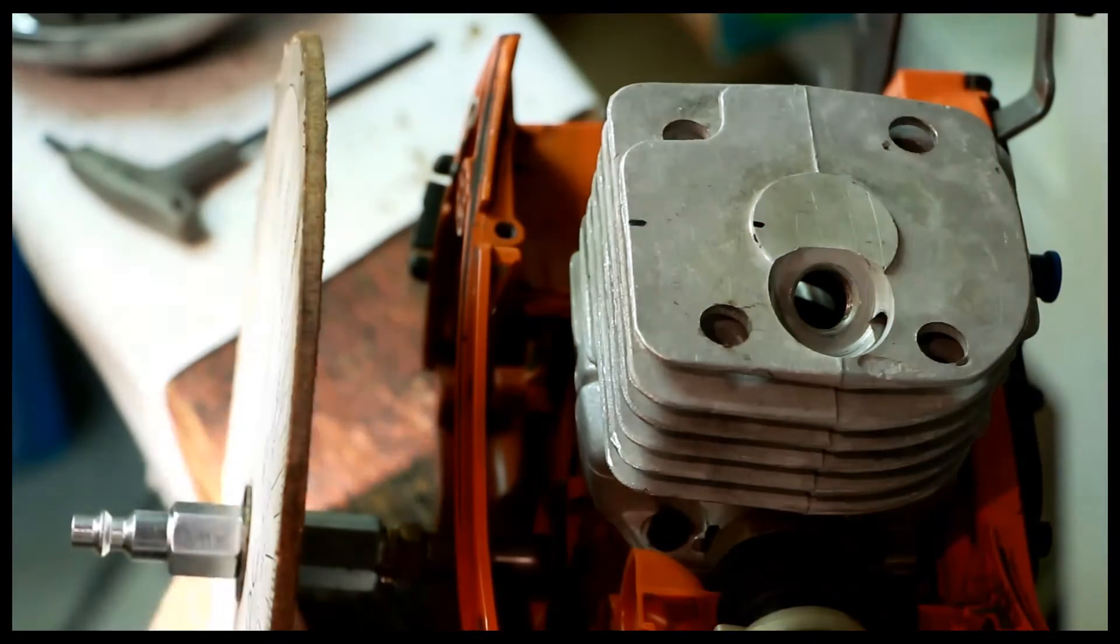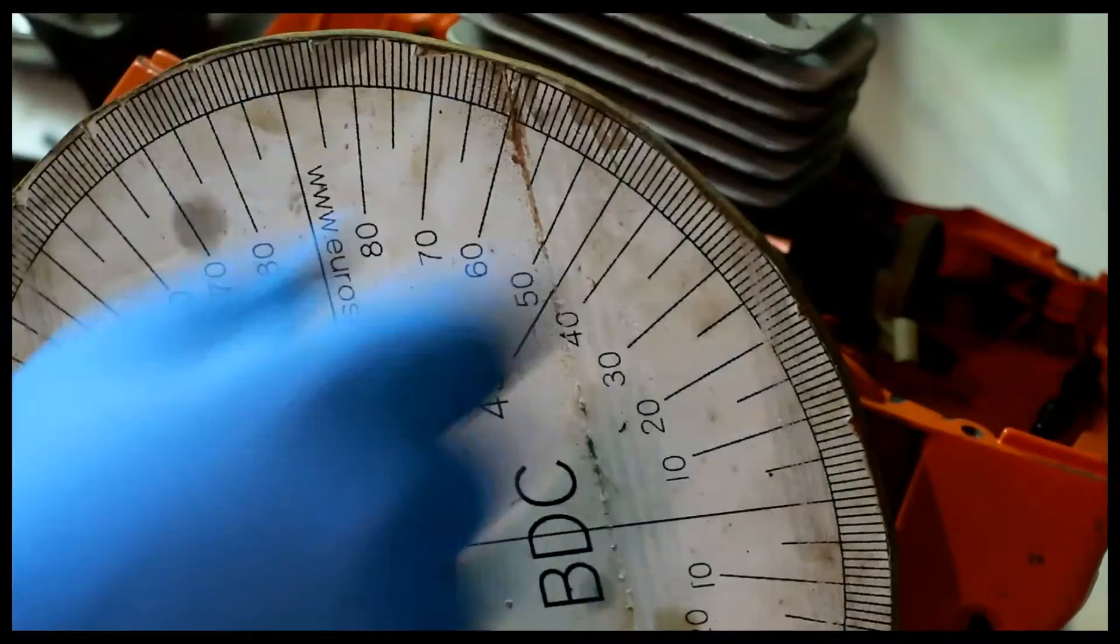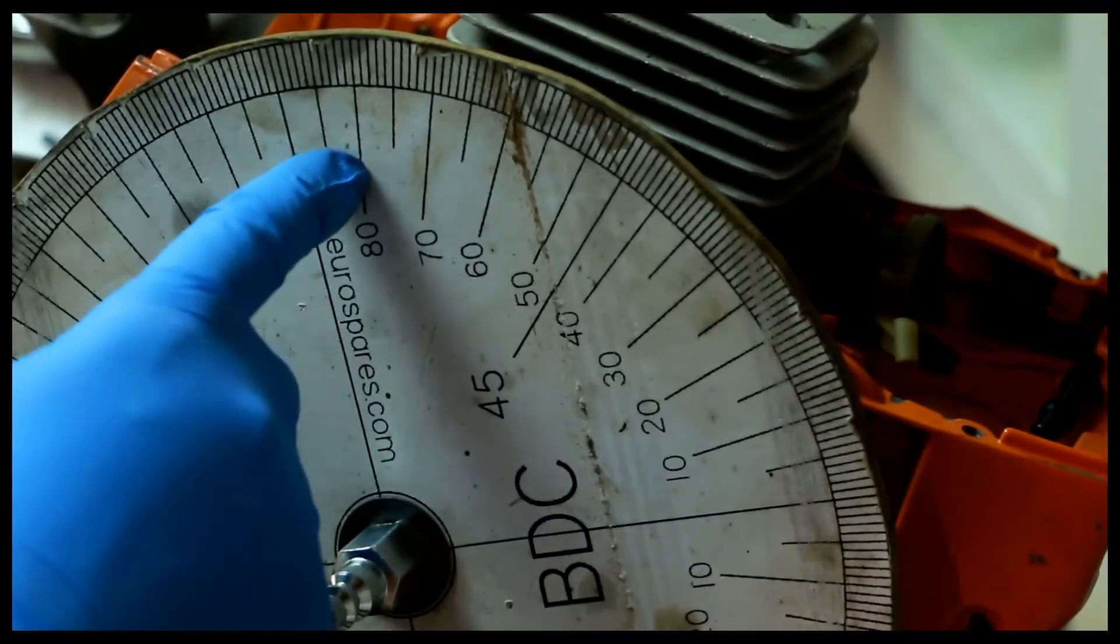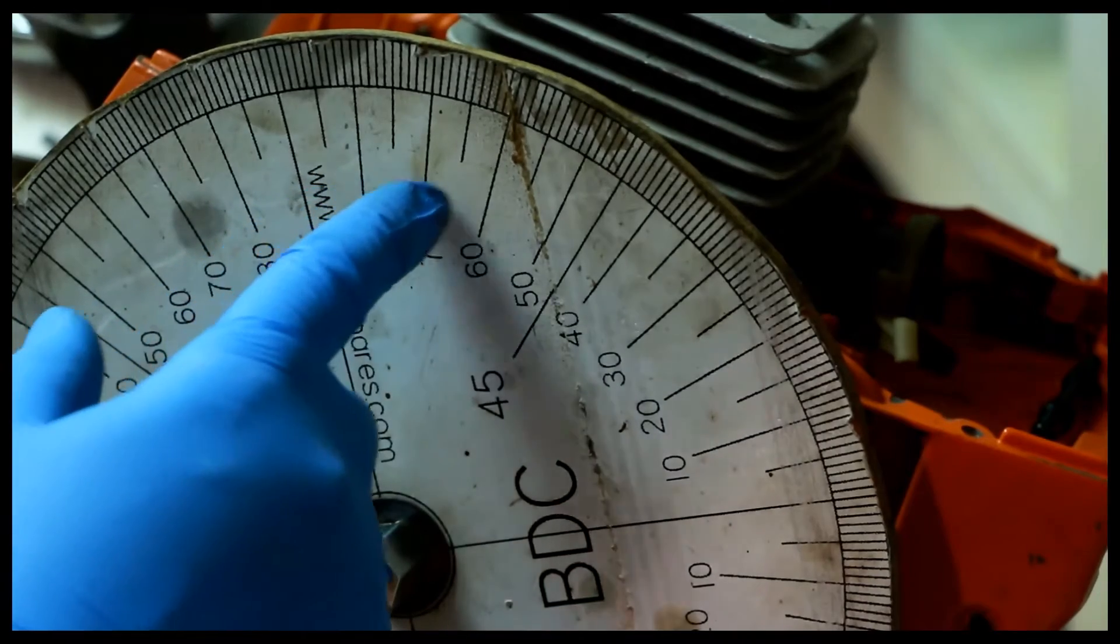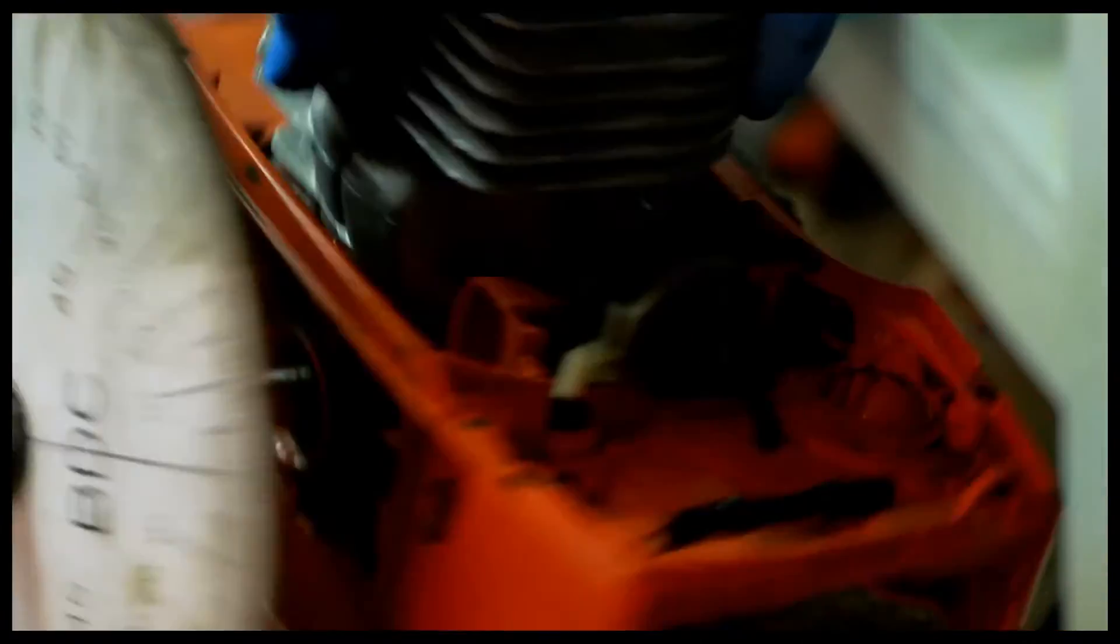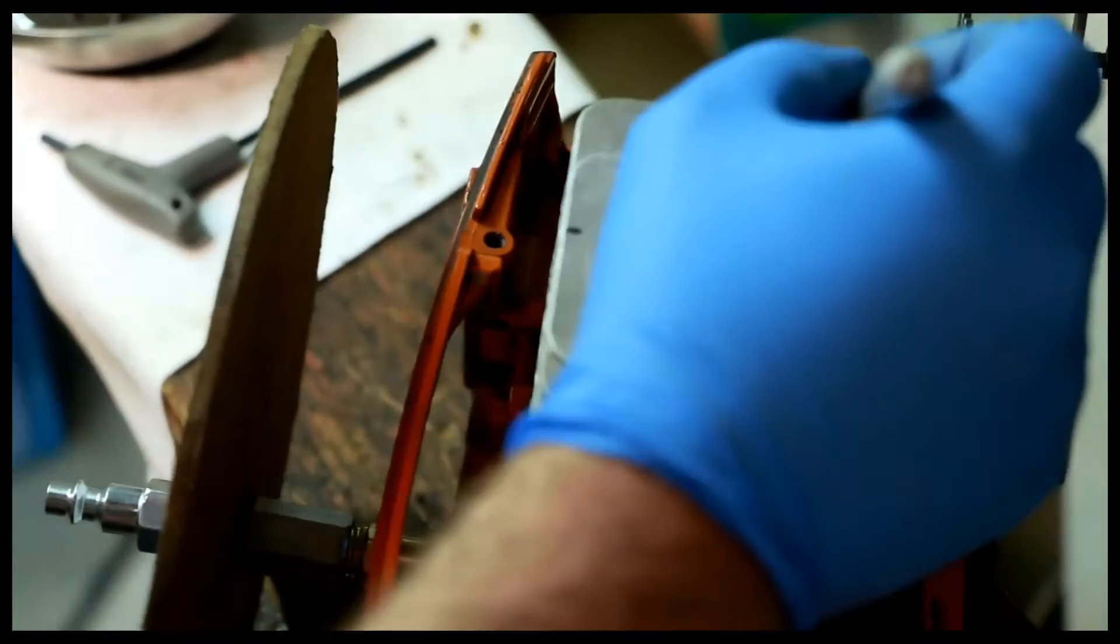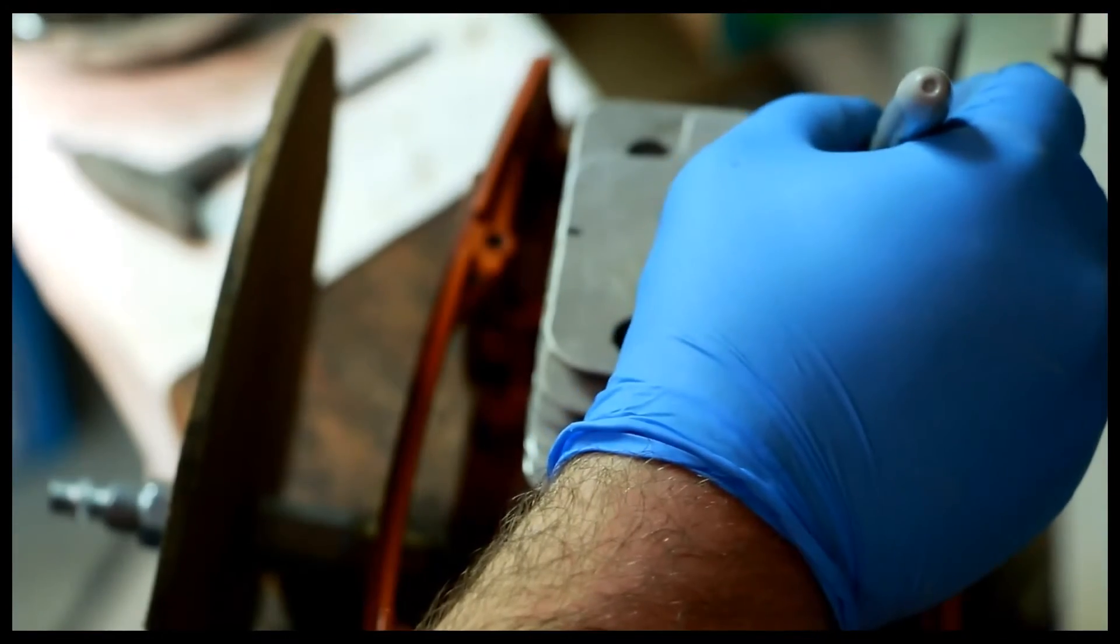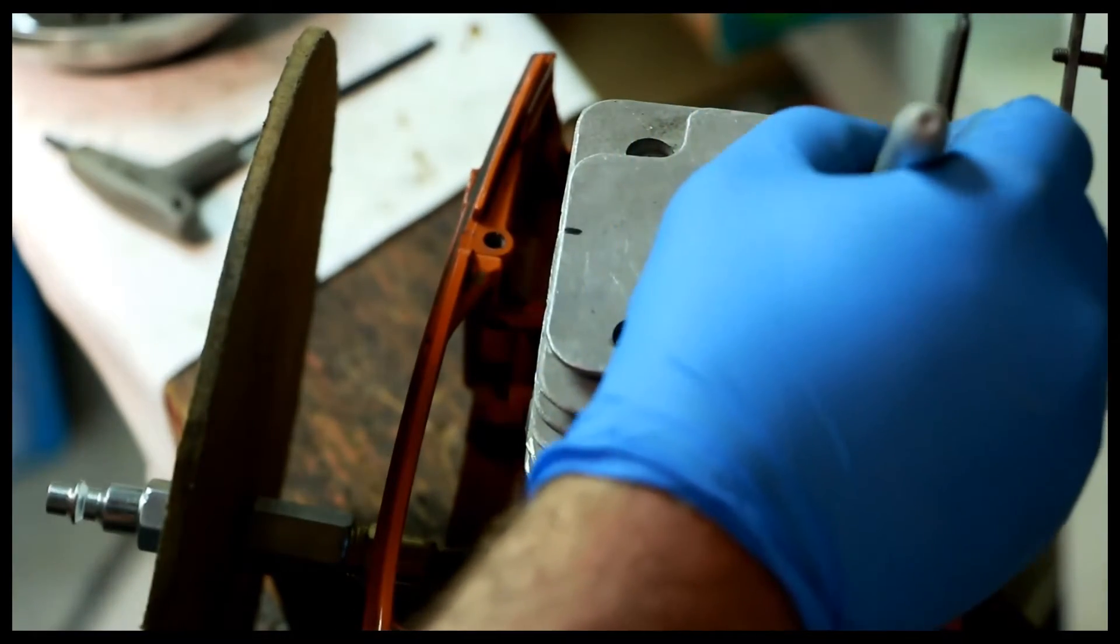You count from top dead center, 90 degrees, 100, 110, 120. This is 120, so this is 122. You write the numbers down, especially if it's on a cylinder. This is 122, 102, and 82. Not too bad, these numbers should do fine.